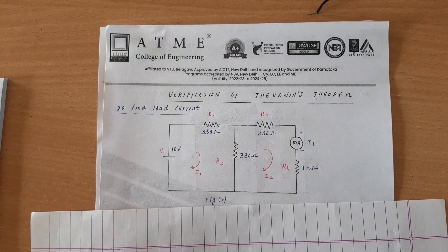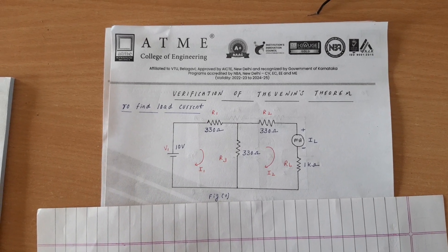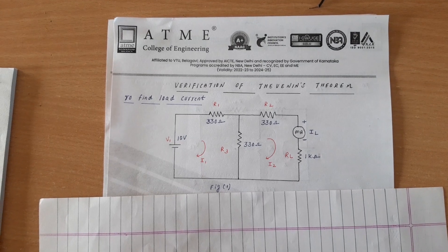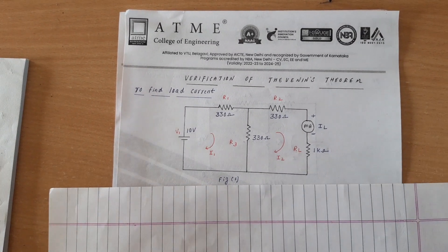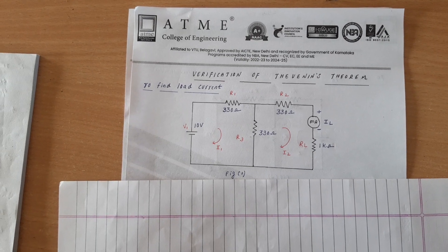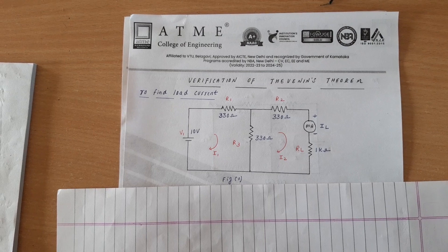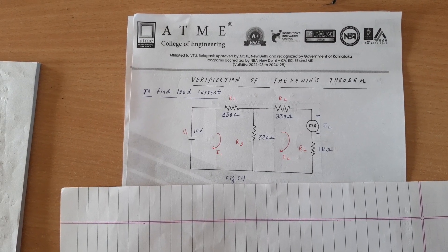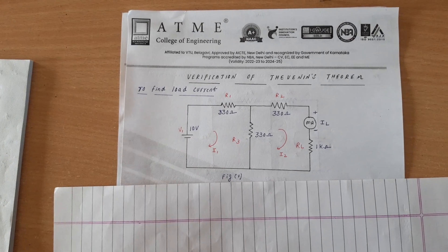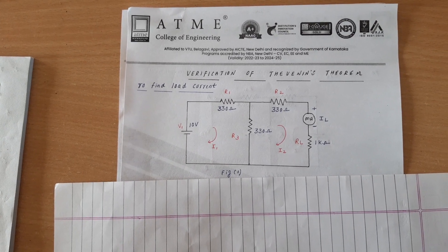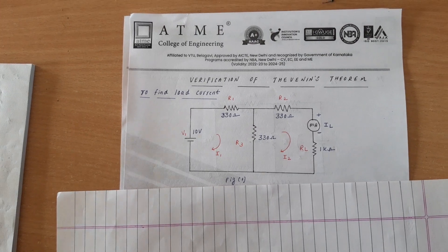To start with, let me explain what is Thevenin's Theorem. The statement goes like this: a linear network consisting of a number of voltage sources and resistances can be replaced by an equivalent network having a single voltage source called Thevenin's voltage and a single resistance called Thevenin's resistance. Using this theorem, we will prove how it works.